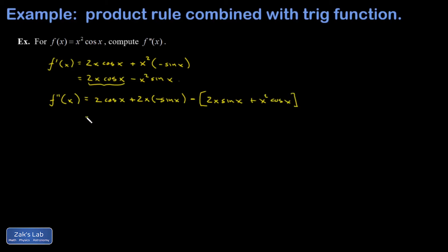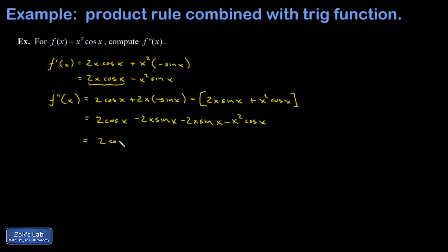Then it's a matter of looking for simplifications. I'll go ahead and distribute everything and clean it up. I noticed that there are two like terms in this expression: negative 2x sine x minus another 2x sine x. So my final answer is 2 cosine x minus 4x sine x minus x squared cosine x, and we're done.